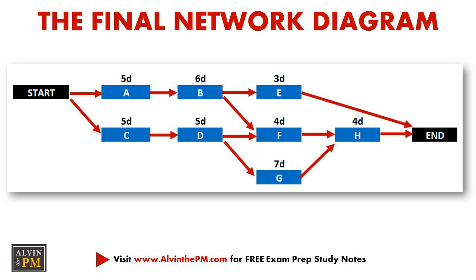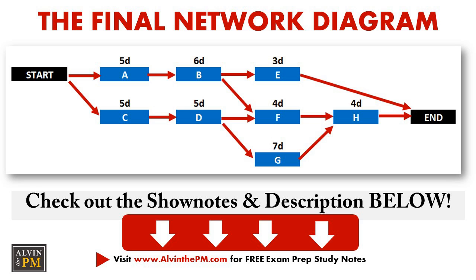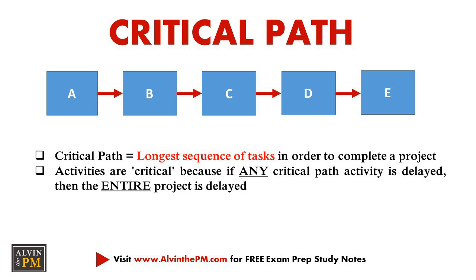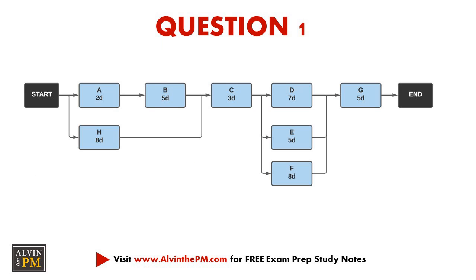In last week's video, we reviewed how to create a network diagram and what exactly is the critical path. If you haven't seen those videos, make sure to check out the links in the show notes and description down below. As a quick refresher, the critical path is the longest sequence of tasks in order to complete a project. So for this question, instead of having to figure out every single path in the network diagram, how do you figure out the critical path really quickly without having to do a bunch of math?